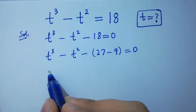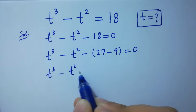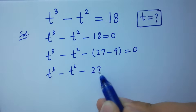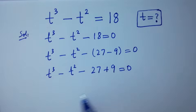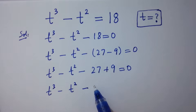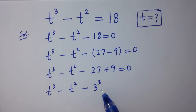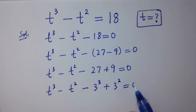So t³ - t² - 27 + 9 = 0. Here t³ corresponds to 3³, since 3×3 = 9 and 9×3 = 27, and t² corresponds to 3², since 3×3 = 9. So this equals zero.